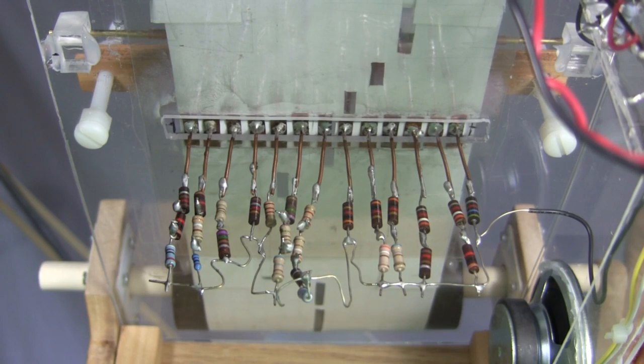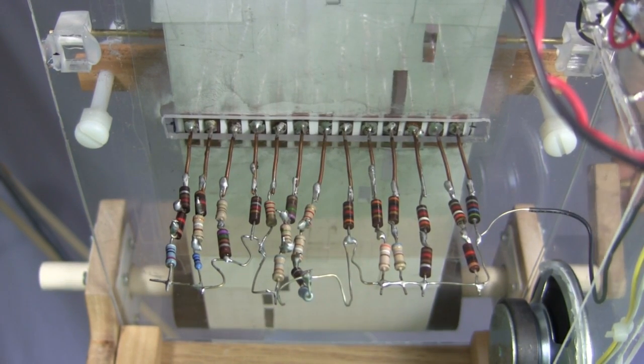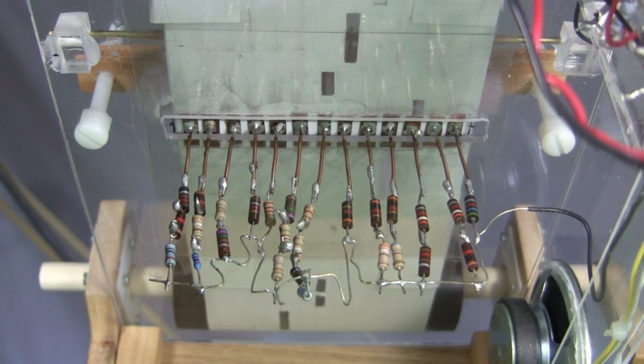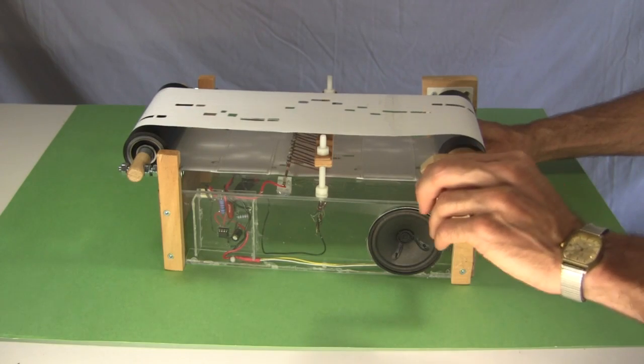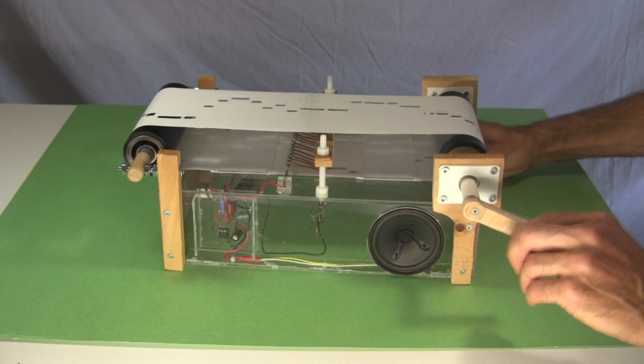So by pulling the paper along, different lines of resistors, i.e. different frequencies or musical notes, are sent to the speaker and played. And so, pulling the paper along, plays the music encoded by the holes in that paper.